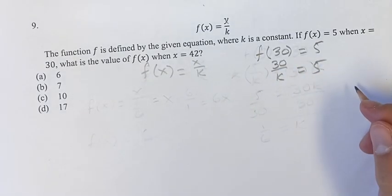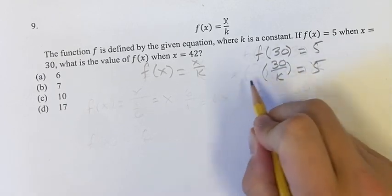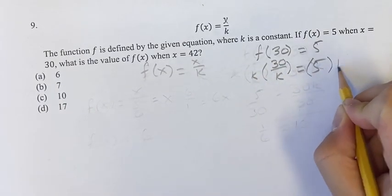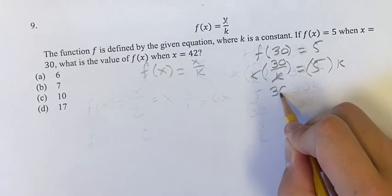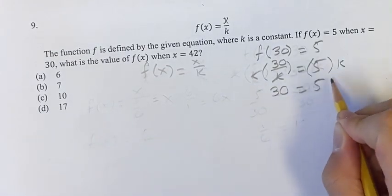Now we can solve for k. If we multiply both sides by k, that'll get k out of the denominator. It'll disappear over here. We're left with 30 equals 5 times k, which is 5k.